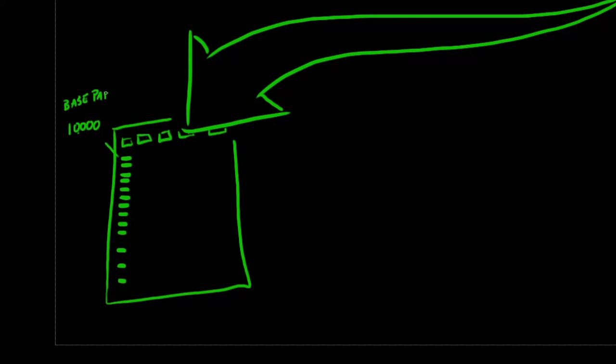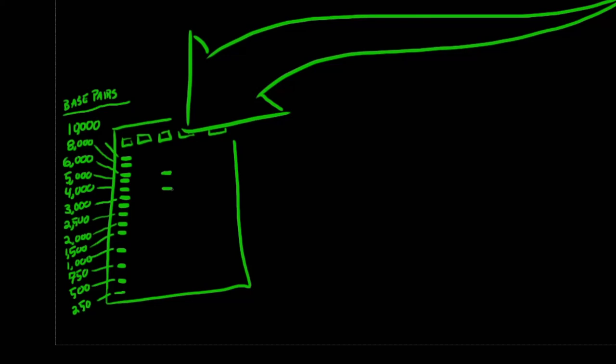Each time we run an electrophoresis gel, there is a small chance of error. There could be inconsistencies in the voltage from the power source. There could be inconsistencies in the consistency of the gel that we mixed up. So in order to be able to make sure that our results are accurate, we add in what's called a molecular ladder, which is a DNA sample that has segments of known sizes. 10,000 base pairs, 8,000 base pairs, 6,000 base pairs, all the way down to 250 base pairs. Notice that the largest segments stay at the top of the gel where we initially loaded it, whereas the smallest ones travel further down.